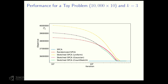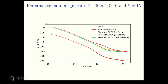Let's see the performance on a toy problem where data are generated from an underlying sparse model with 10,000 observations. The sketching option — whether uniform, Gaussian, or count sketch — does not matter too much. Interestingly, count sketch performs slightly better than the deterministic approach. But on real image data, computing the top 15 sparse vectors, all sketched approaches converge to a different stationary point.